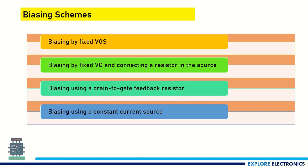To fix VGS and get a constant ID, we will have different biasing methods. There are four biasing methods: one is biasing by fixing VGS, biasing by fixed VG with a resistor at the source, biasing using a drain-to-gate feedback resistor, and biasing using a constant current source.